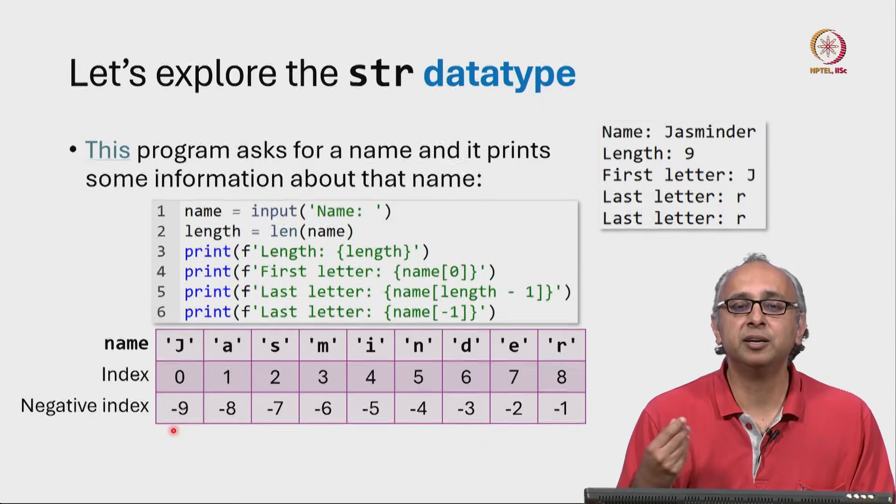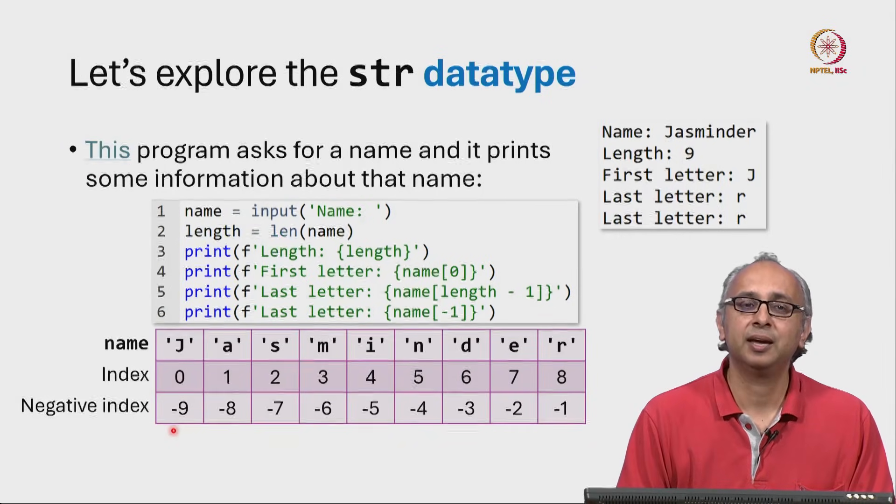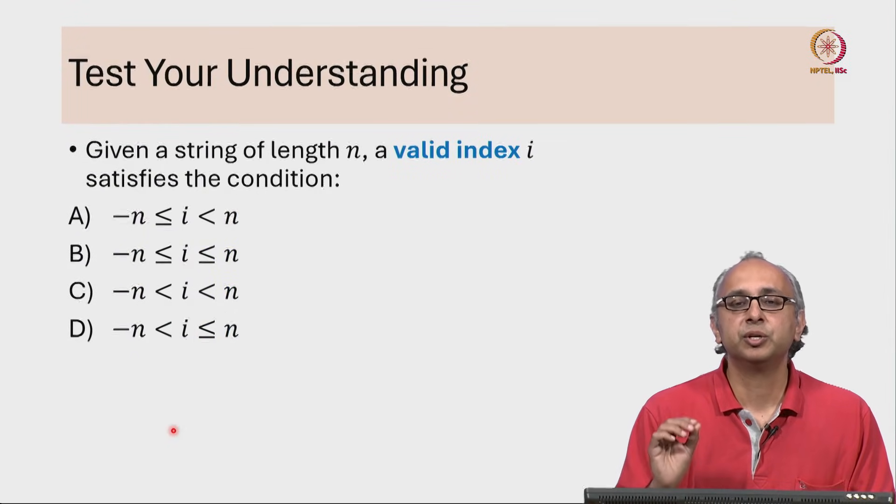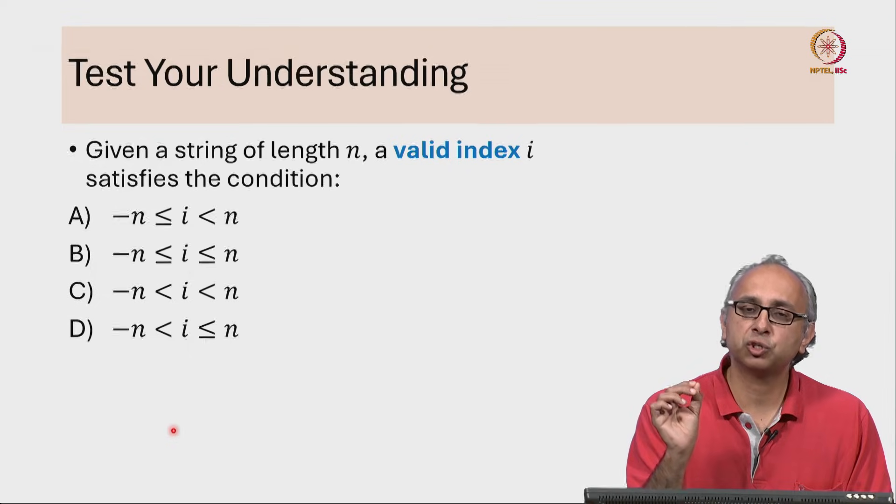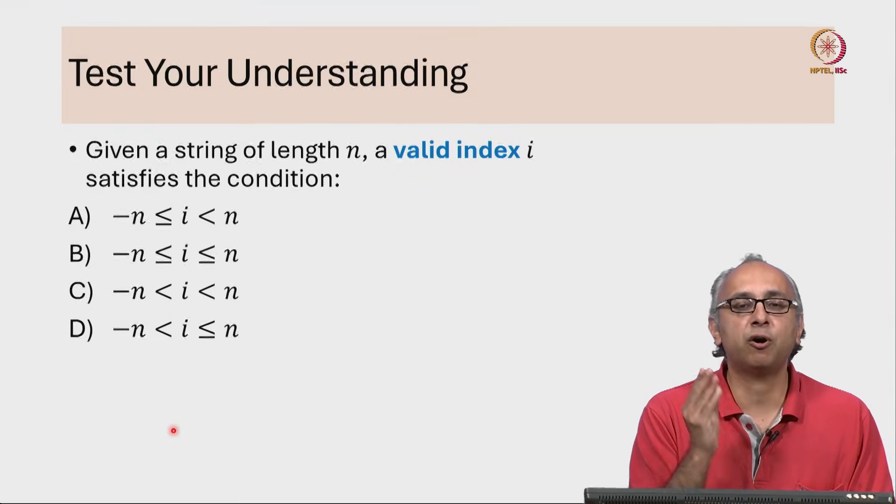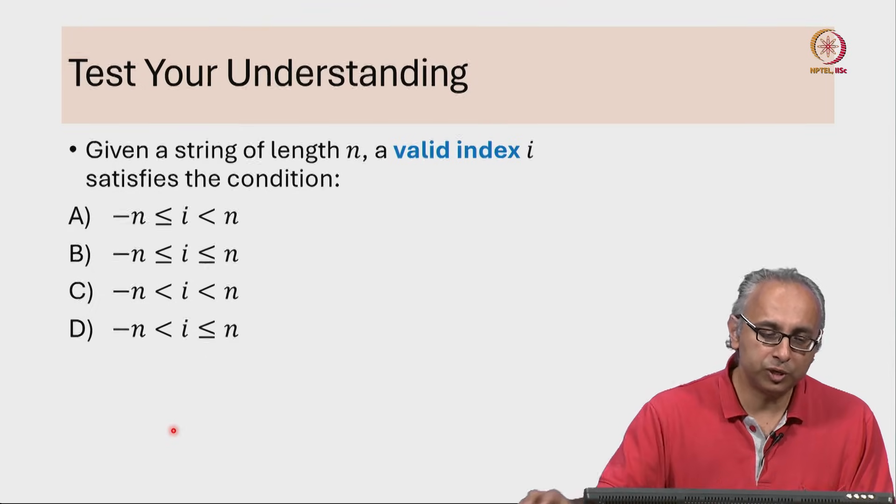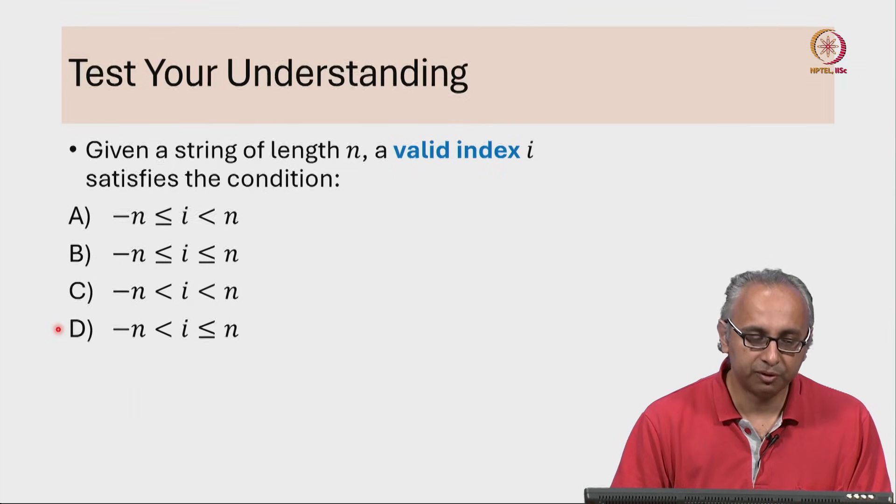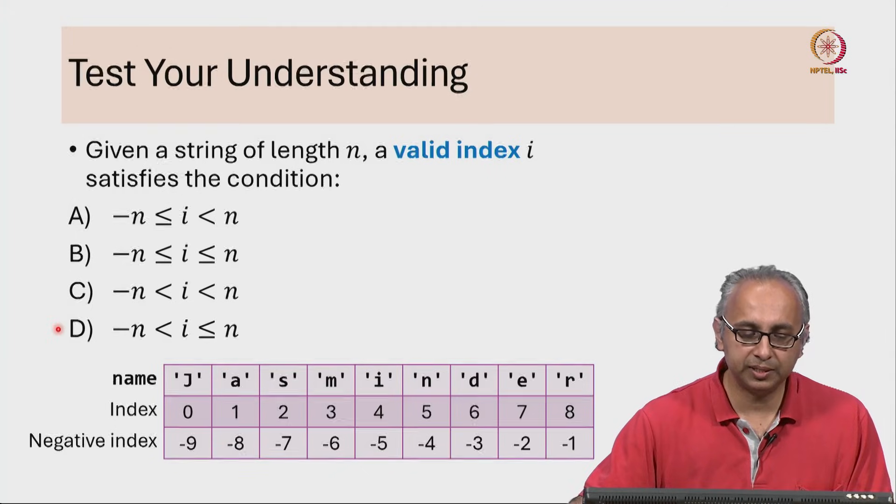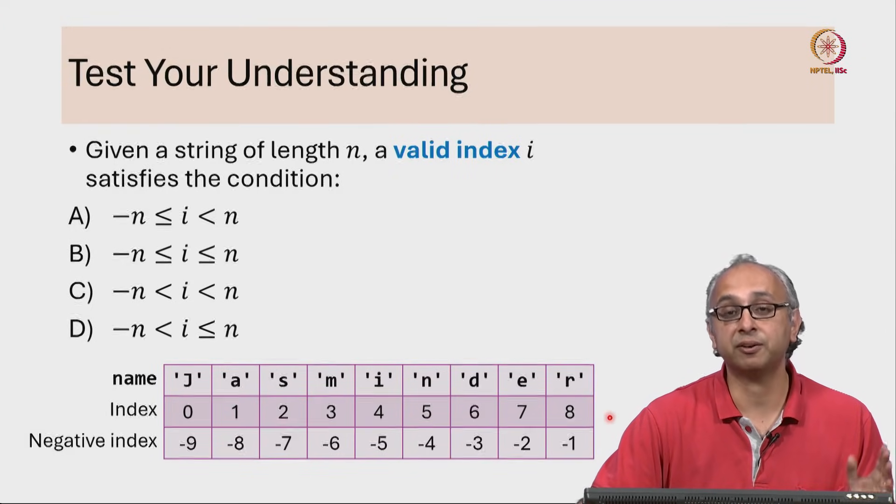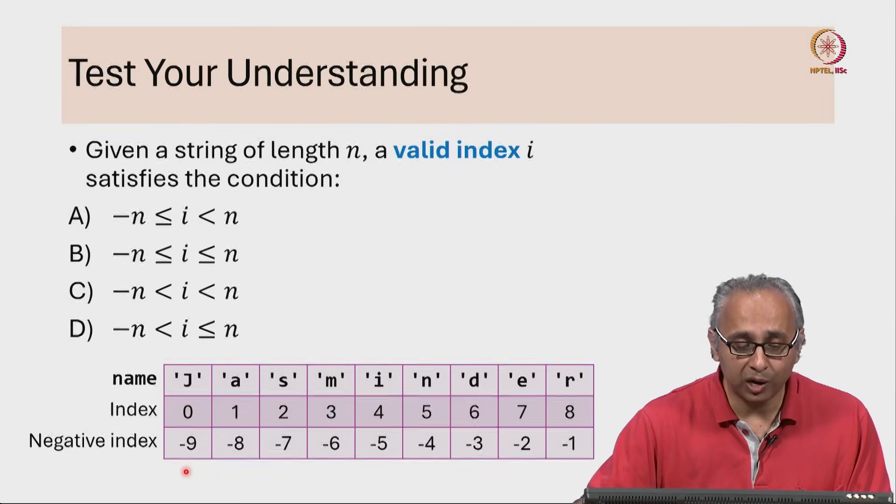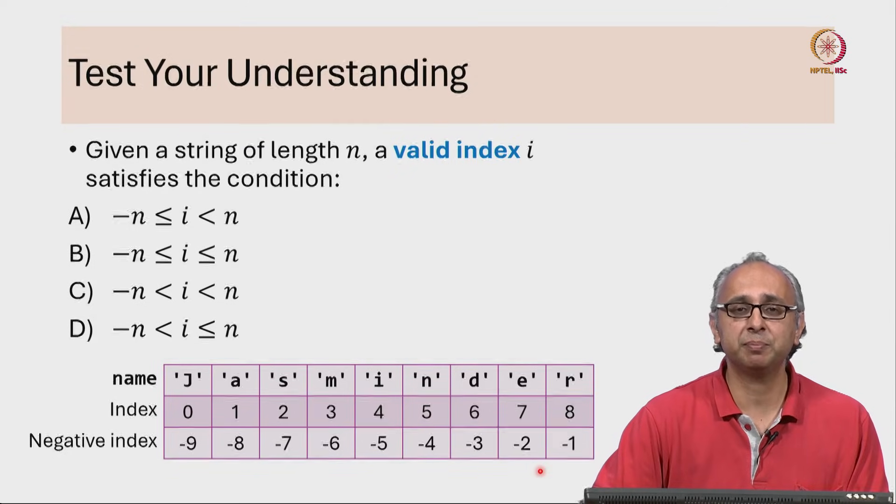So to make sure we have understood this idea of indexing and negative indexing, let's test our understanding. In general, if I give you a string of length n, what is the range of valid indices? Which of these conditions does it satisfy? To help you test your understanding, remember the example we just saw with Jasminder. These are the non-negative indices that are valid and these are the negative indices that are valid. No other index outside this range is valid. Keep this example in mind and see if you can figure out what the general answer should be.